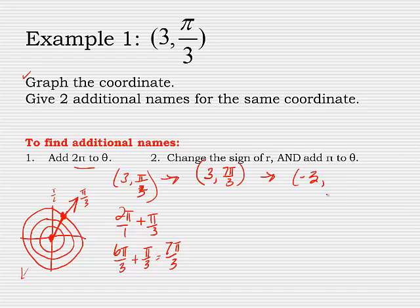So to give me a new name, I would do negative 3. But if I change this to a negative, I have to take the original angle and not add 2 pi to it, but add 1 pi. Because it's really just rotating it 180 degrees, which is the same as 3 pi over 3, which makes this 4 pi over 3.